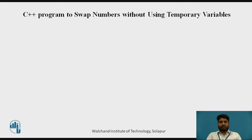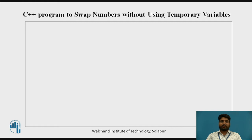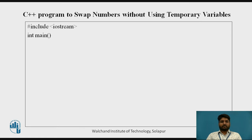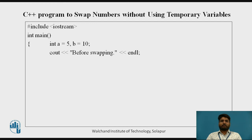We will now see the second program: a C++ program to swap numbers without using temporary variables. In the previous program we took three variables, but in this program we are taking only two variables and the temporary variable is neglected. The first three lines are the same — int a equal to 5, b equal to 10 — and we are not taking the third variable.